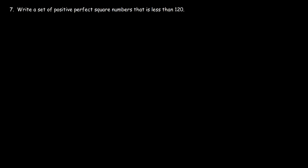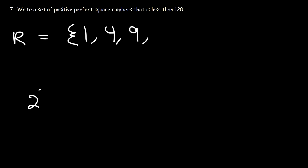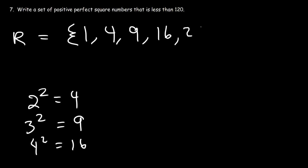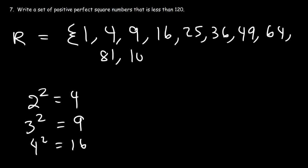The last problem: write the set of positive perfect square numbers that is less than 120. Let's use R. The perfect squares are: 1 (1²), 4 (2²), 9 (3²), 16 (4²), 25 (5²), 36 (6²), 49 (7²), 64 (8²), 81 (9²), 100 (10²). Next would be 11² equals 121, which is greater than 120, so we stop at 100.